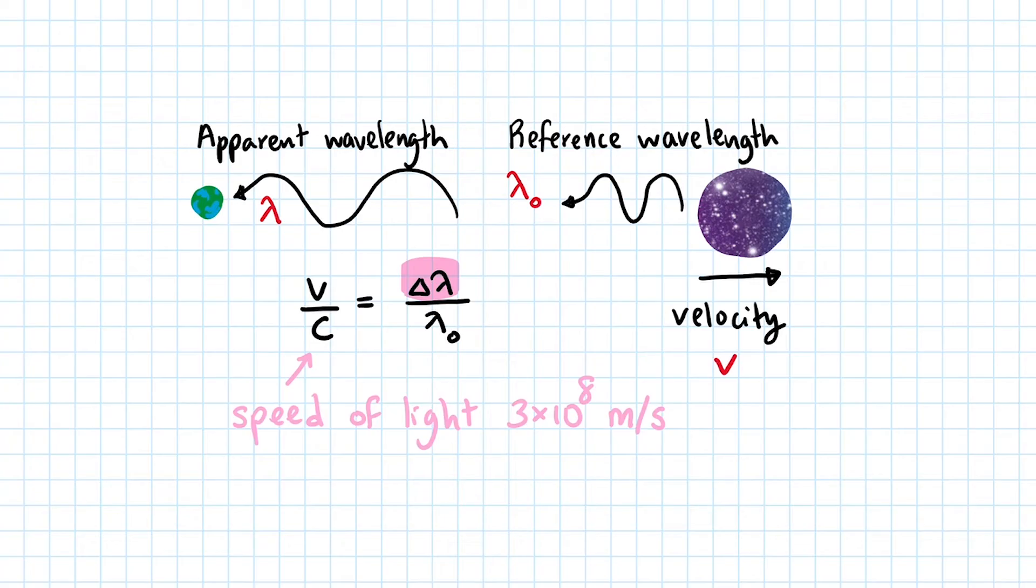The Greek symbol delta lambda represents the shift in wavelength. That is the difference between the reference wavelength and the apparent wavelength.